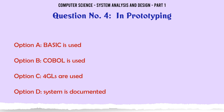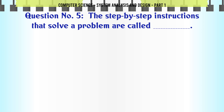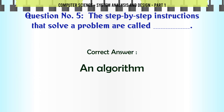The correct answer is: Fourth-generation languages (4GLs) are used. The step-by-step instructions that solve a problem are called: A. An algorithm. B. A list. C. A plan. D. A sequential structure. The correct answer is: An algorithm.